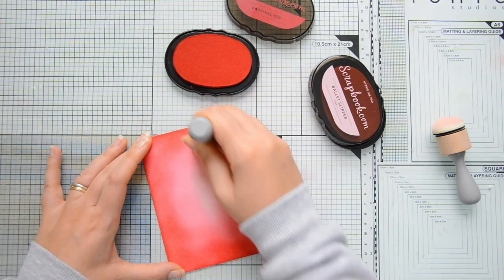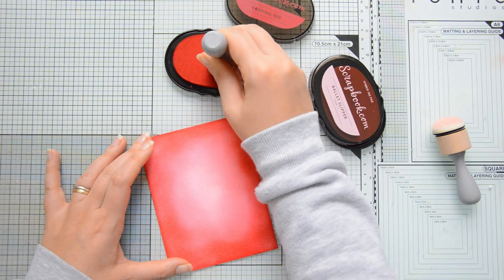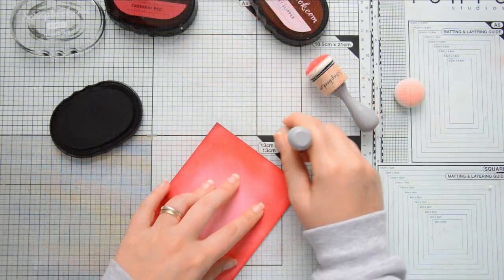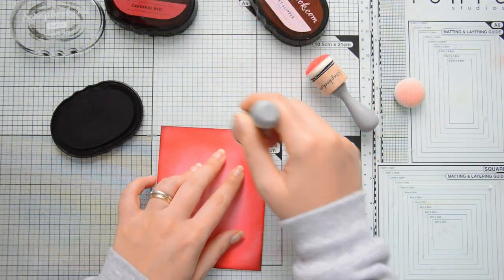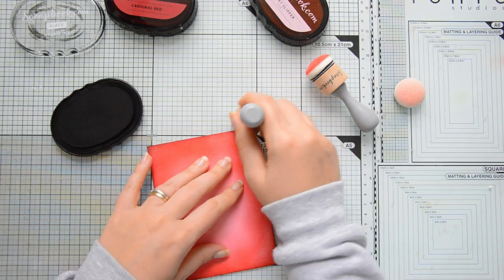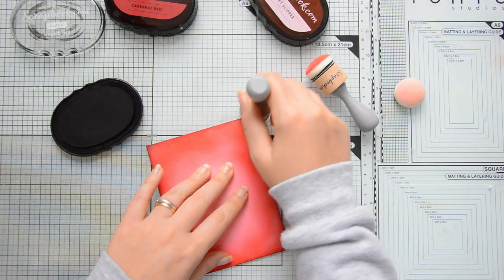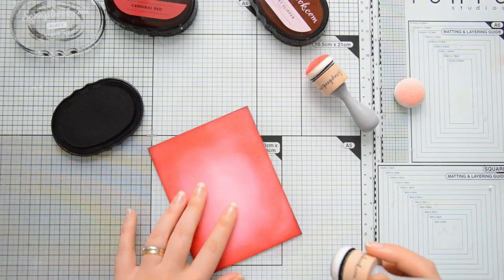And then I also decided that I wanted to darken up the edges a little bit more, so I'm going to add a very light touch of my hybrid ink in the color black and I'm going to add that just to the very edges of the panel.